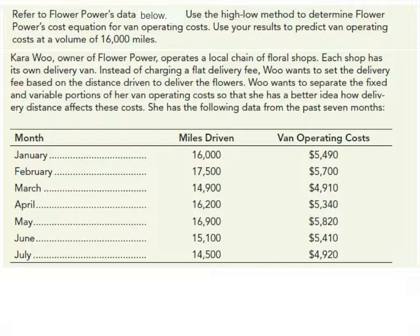Each shop has its own delivery van. Instead of charging a flat delivery fee, Wu wants to set the delivery fee based on the distance driven to deliver the flowers. Wu wants to separate the fixed and variable portions of her van operating costs so that she has a better idea how delivery distance affects these costs. She has the following data from the past seven months. So we've got January through July, we have our miles driven, and our van operating costs.